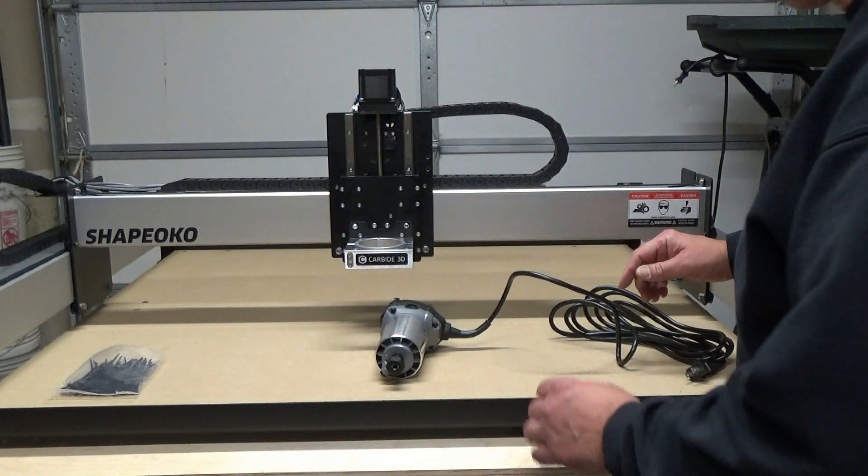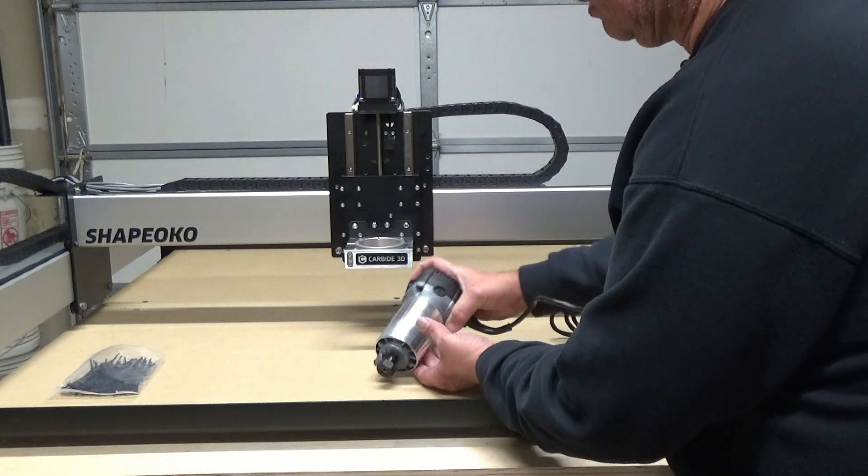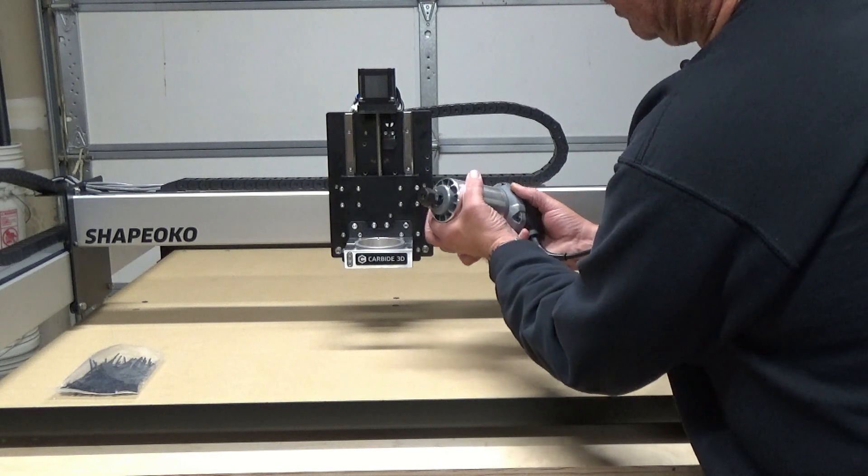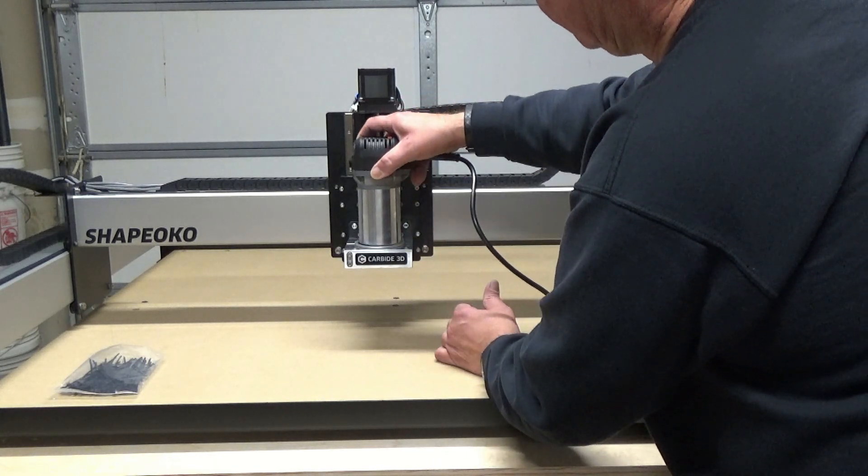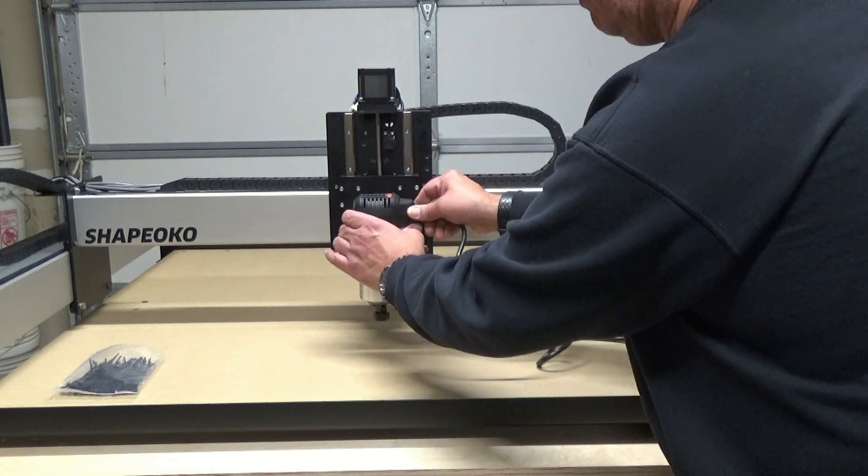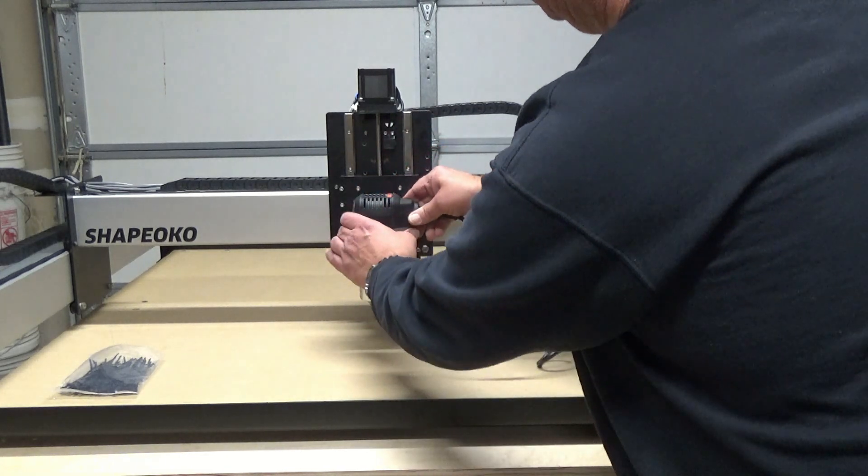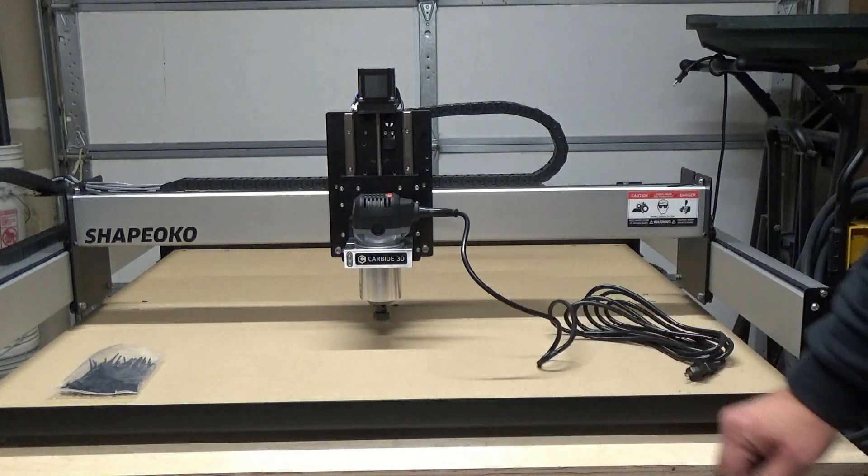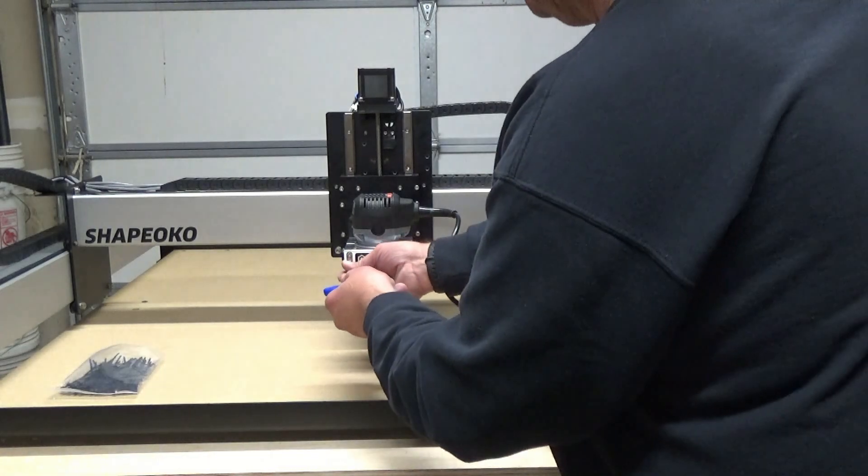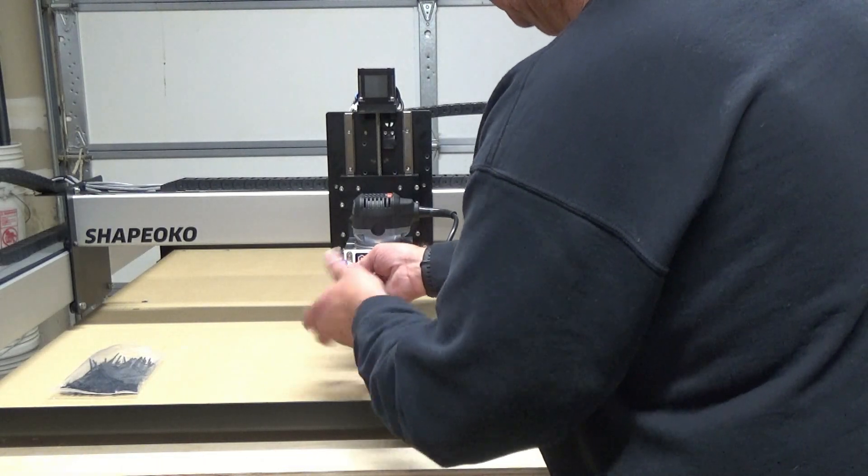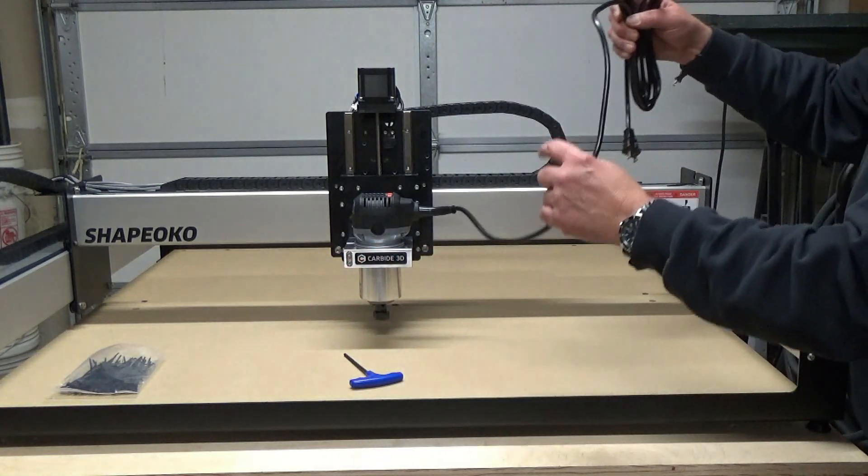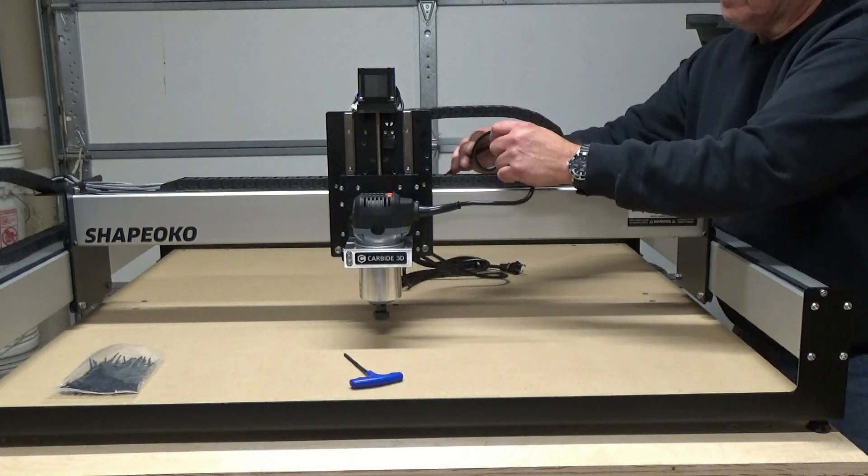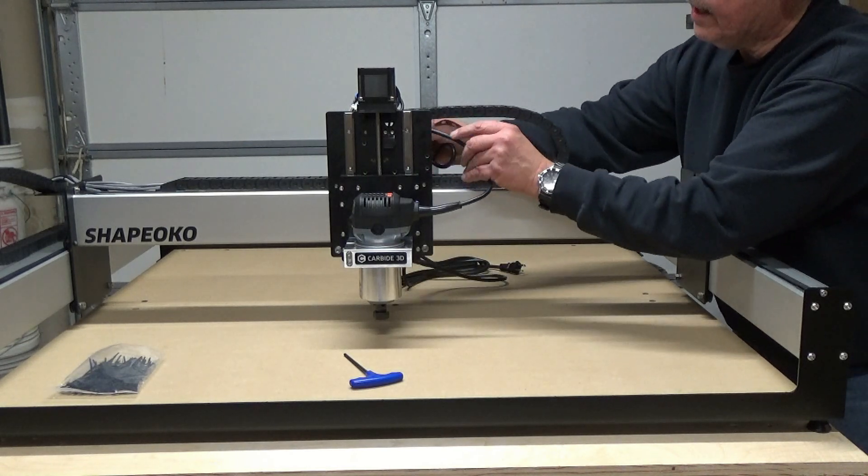Now we can install the router. So this is the carbide router that I purchased with the unit. And it has a collar here because of the size of the router. It slips in. Perfect. And we'll take our four millimeter Allen wrench and we'll tighten that down.